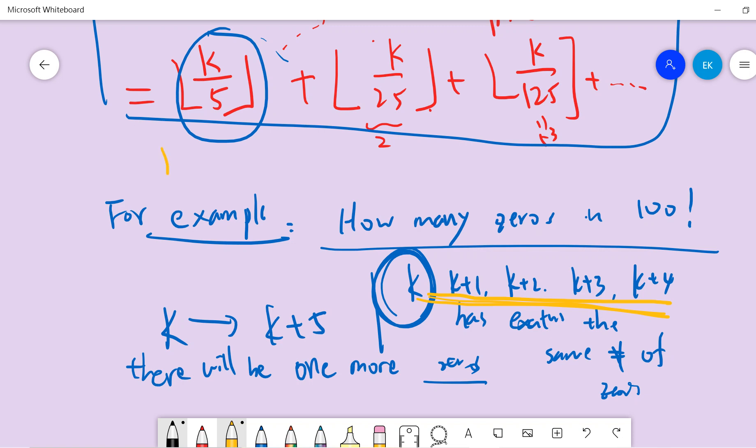When k goes to k plus 1, all the terms in the formula stay the same. Only when k goes to k plus 5 will you have one more zero.